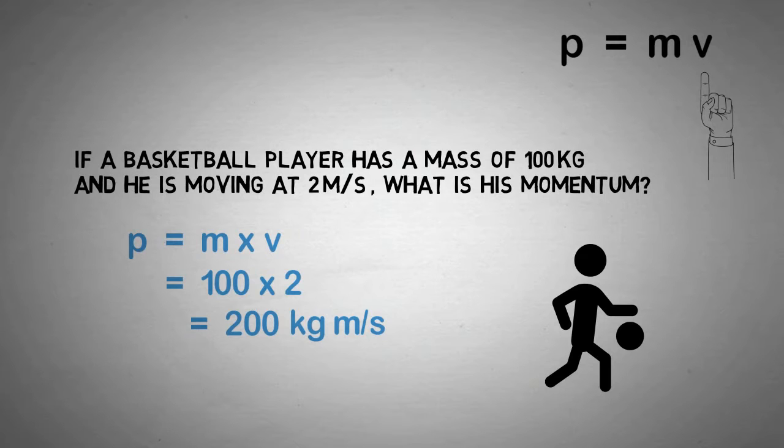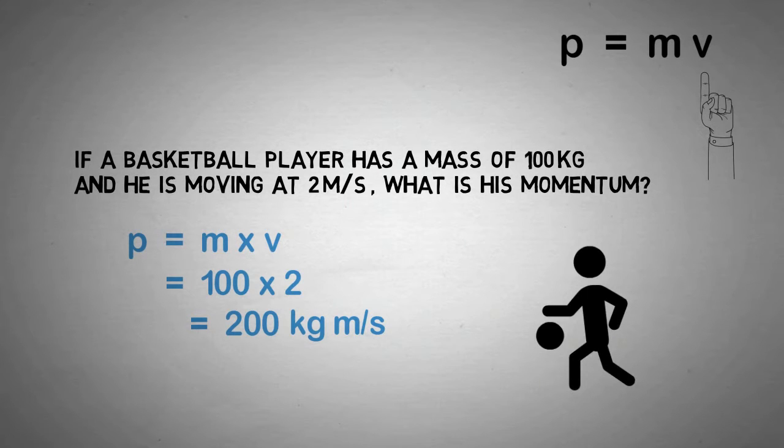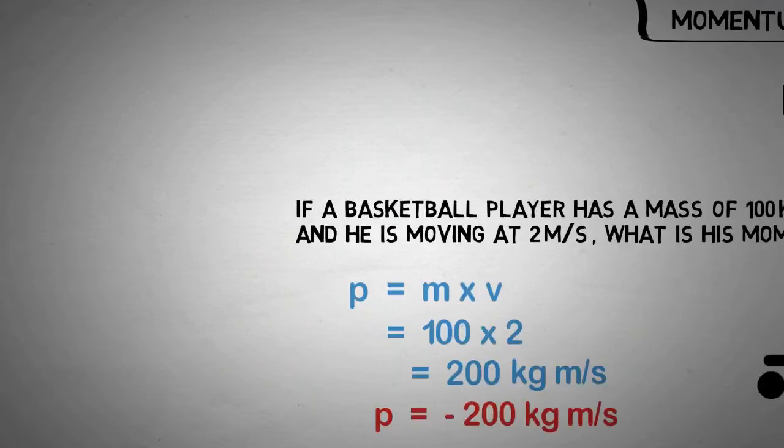So far so good. But do you remember that velocity measures the speed in a given direction? This means that momentum also has a direction. Therefore, if the basketball player now runs at 2 meters per second in the opposite direction, his momentum changes. His momentum is now negative 200 kilograms meters per second.